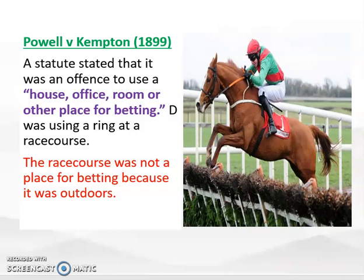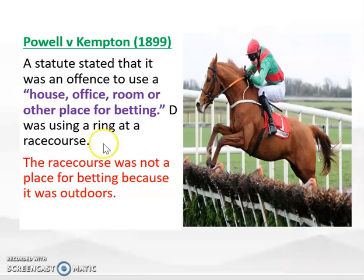A case example that illustrates this further is Powell v Kempton (1899), a classic case on Ejusdem Generis. The statute said it was an offence to use a 'house, office, room or other place for betting.' The court used Ejusdem Generis and looked at the common theme between house, office, and room — they are all indoors. The defendant was using a rink at a racecourse, which was outdoors. The court held the racecourse was not caught by the statute because it was outdoors and didn't follow the same kind as the specific words in the list.